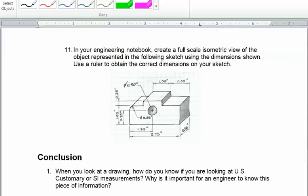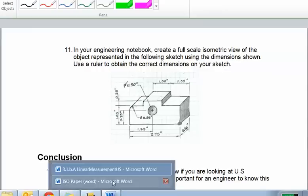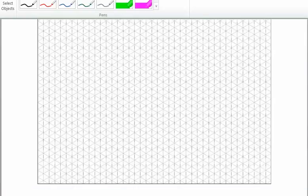One last thing here for this. In your engineering notebook, create a full-scale isometric view of the object represented in the filing sketch using the dimensions shown. Use a ruler to obtain the correct dimensions on your sketch. On here now, everything's going to be measured in inches. I'm going to start with that point right there and just create the box for you.